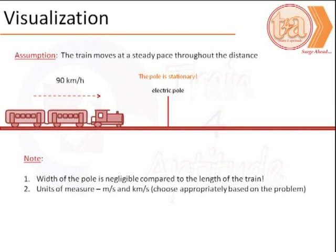Given that the electric pole is stationary, its speed is 0 km per hour. The train is approaching the pole at a speed of 90 km per hour and would completely cross it in 9 seconds.